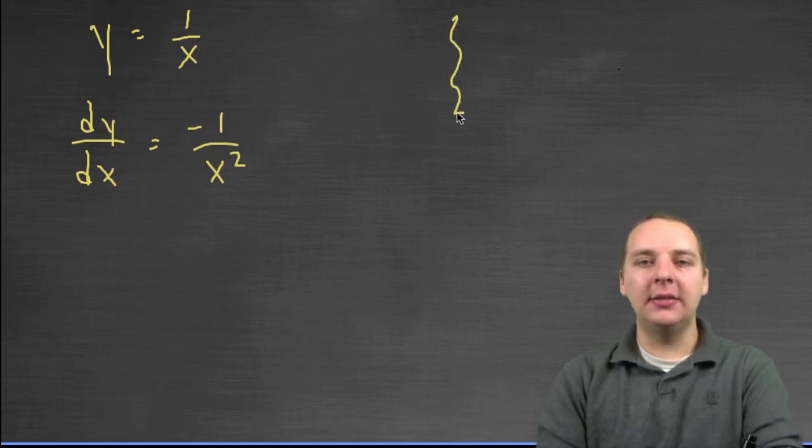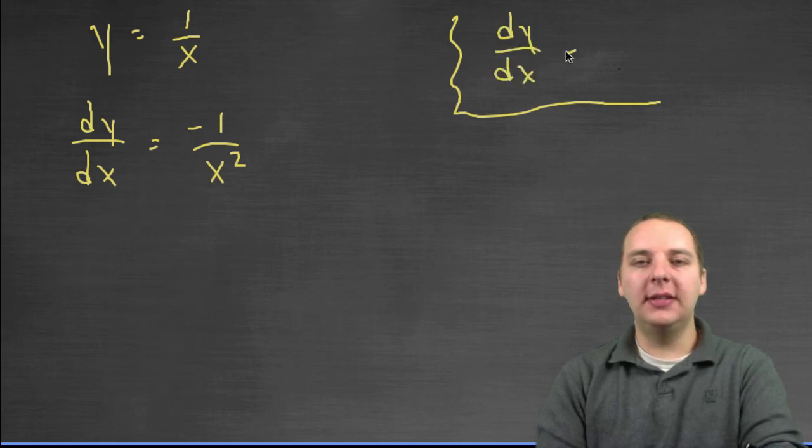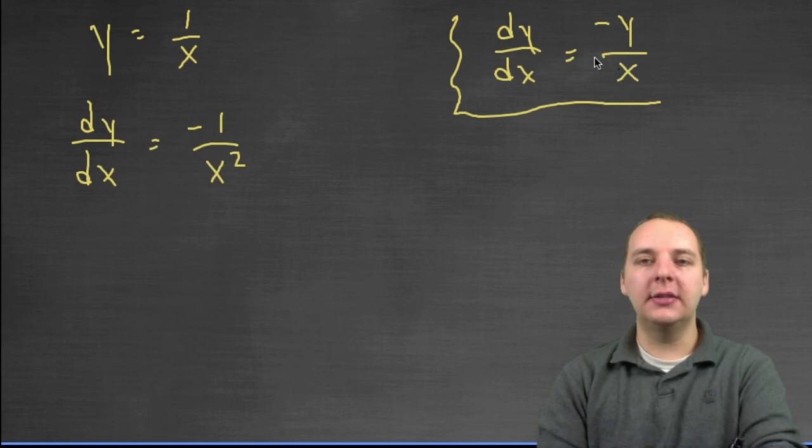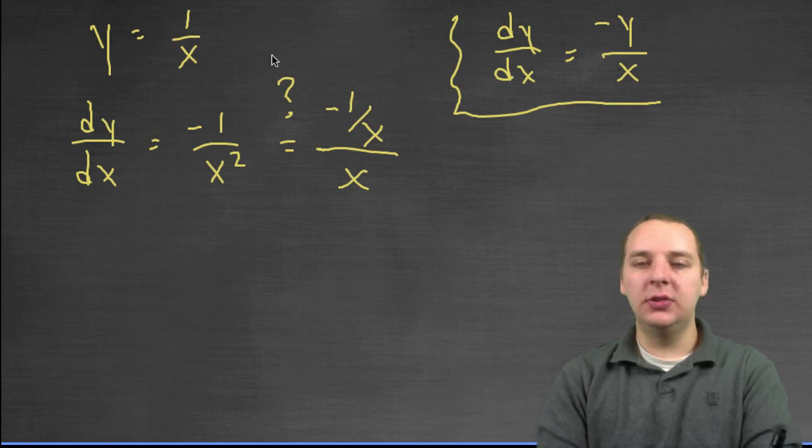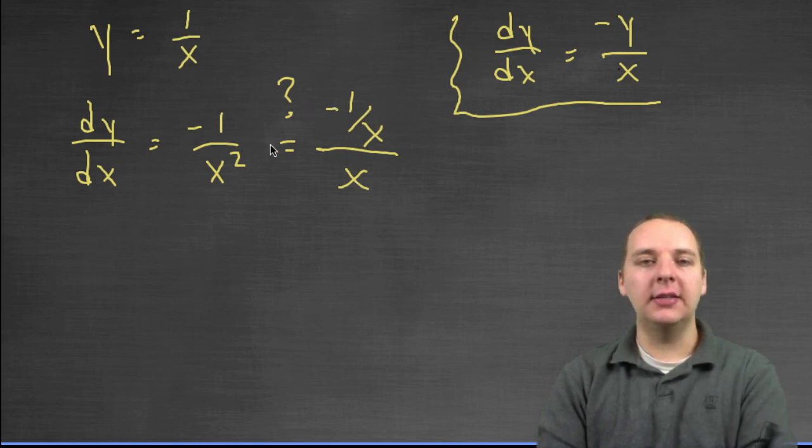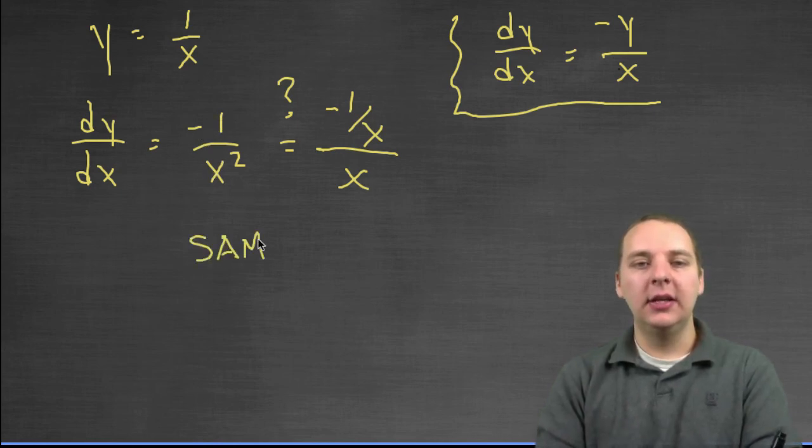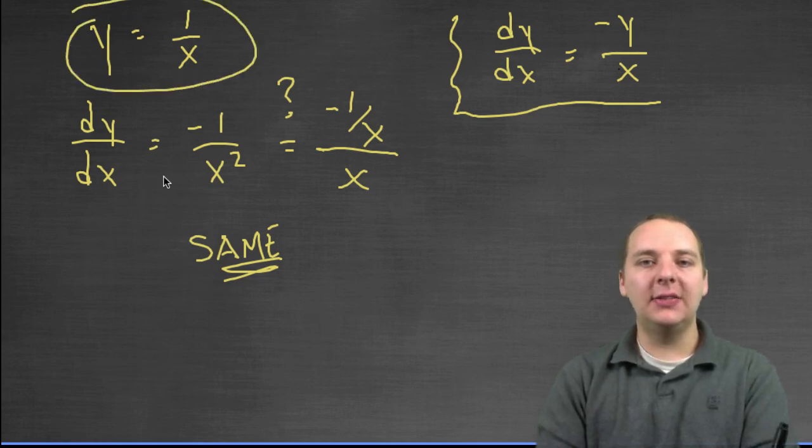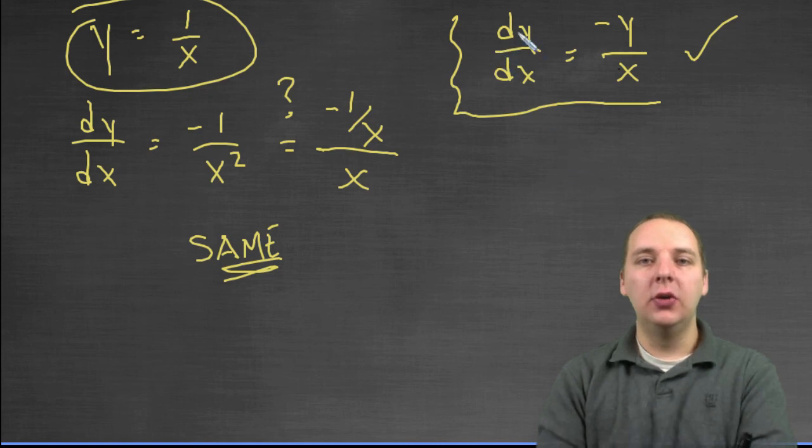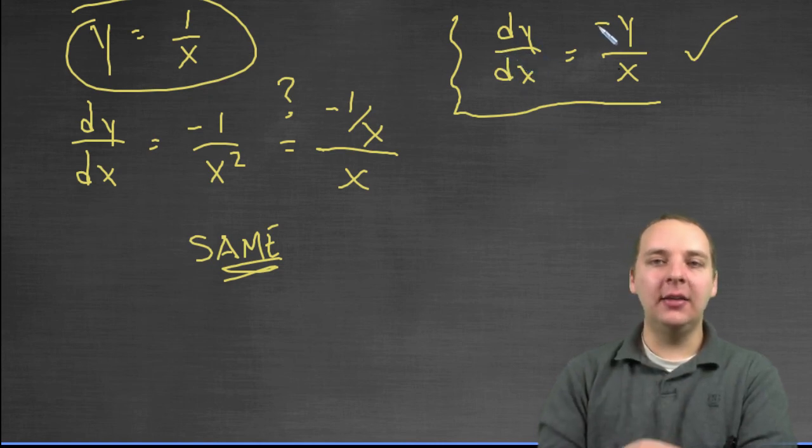So let's see, is that really the same thing as negative y over x? I don't know, let's see. Let's see if it works. Let's take negative y over x. If this really is the solution, I should be able to substitute this for y. So I have negative y over x, and I'll ask you, are these the same? Is negative 1 divided by x divided by x the same thing as negative 1 over x squared? Yes it is, these are the same. Now what does that mean? That means we found the solution to the differential equation. This is the guy who satisfies this differential equation. That's the function whose derivative is itself negated divided by x.